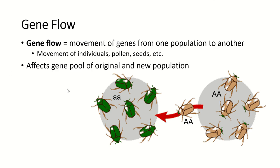Gene flow is another mechanism that can have a big impact, especially on small populations. Gene flow is the movement of genes from one population to another. This usually happens because individuals move, but it doesn't have to be — pollen blowing in the wind, for example, is a little packet of plant sperm that can travel a long way without the whole plant moving to another population. Individuals also don't have to stay in a new population — they could reproduce and then return to their original population.